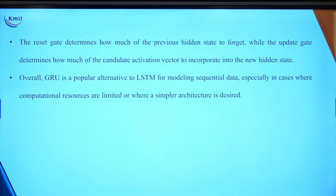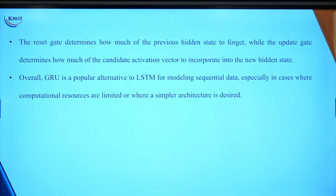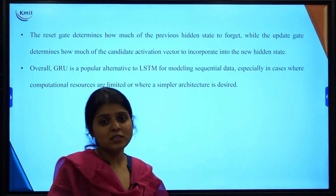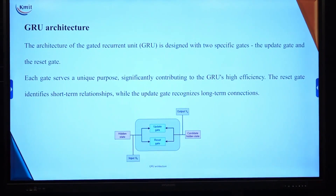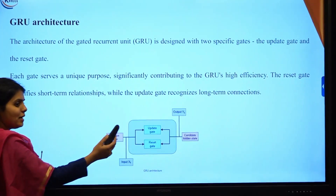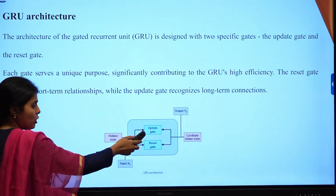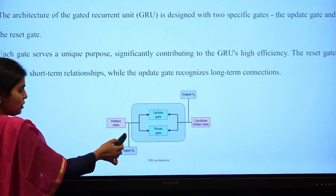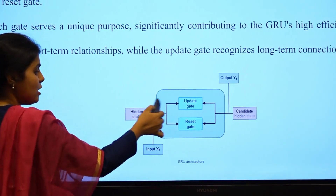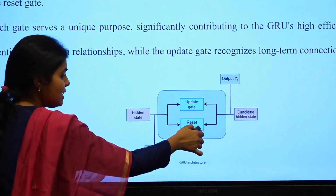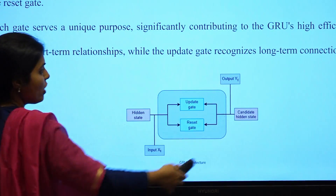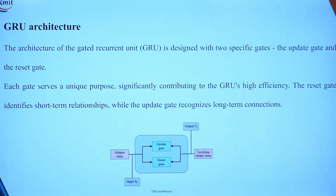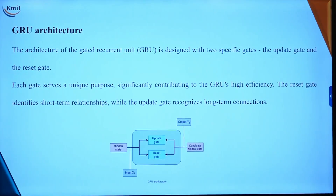When you have fewer computational resources or want to use a simpler architecture, we replace LSTMs with GRUs. In the simple GRU architecture, instead of having input gate, output gate, and forget gate, we have only the update gate and reset gate. We take the input and feed it to the update gate, which decides what information to carry forward from the hidden state, while the reset gate decides what to discard, feeding into the candidate hidden state.